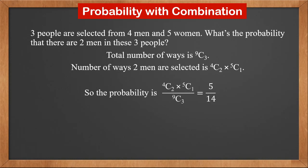So the probability 2 men are selected is 4C2 times 5C1 over 9C3. The result is 5 over 14.